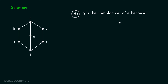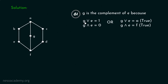G is the complement of E because the least upper bound of G and E is 1, or A, and the greatest lower bound of G and E is 0, or F. The least element in this lattice is F and the greatest element is A. The greatest lower bound of G and E is F and the least upper bound of G and E is A. Therefore, G is the complement of E.